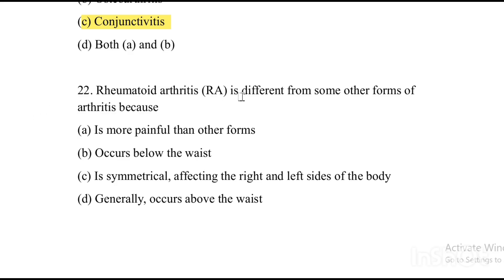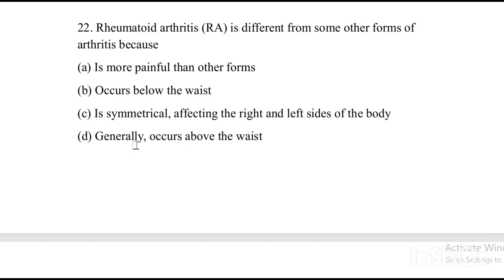Next question: Rheumatoid arthritis is different from some other forms of arthritis because — Option A: it is more painful than other forms. Option B: it occurs below the waist. Option C: it is symmetrical, affecting the right and left sides of the body. Option D: it generally occurs above the waist. The answer is Option C — rheumatoid arthritis is symmetrical, affecting the right and left sides of the body.